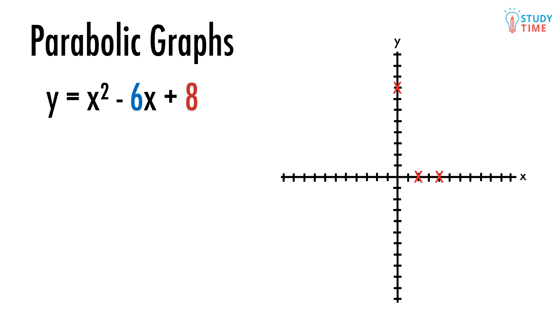We need to find one more point, which is called the vertex or turning point of the parabola. This is the bottom of the bowl of the parabola. Because of its symmetry, we know that the vertex is going to be smack bang between the x-intercepts. The midpoint between 2 and 4 is 3.